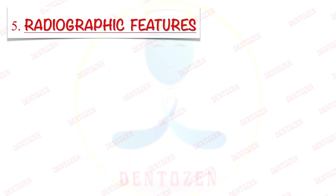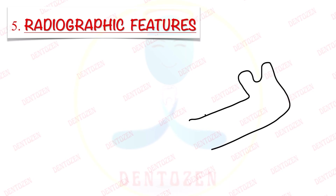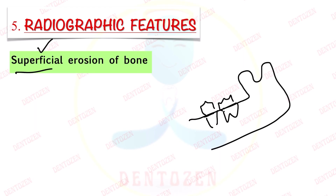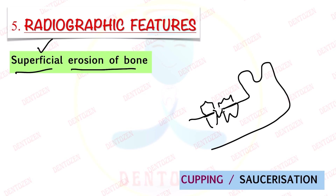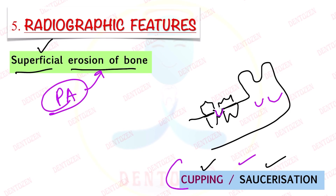Now coming to radiographic features. Since this is a peripheral tumor, this tumor can cause superficial erosion of the bone. It can erode the superficial surface of the bone, and on radiograph this is called cupping or saucerization. So you have to remember: on radiograph, peripheral ameloblastoma can cause superficial erosion of bone, which appears as cupping or saucerization.